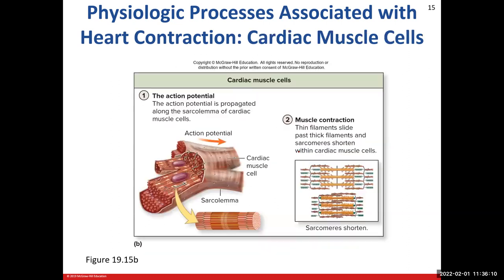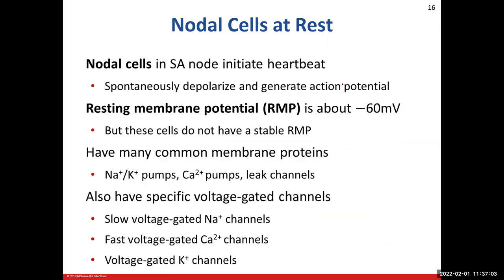Of course, we can't ignore our cardiac muscle cells — these are the ones that make the magic happen. They will also propagate the action potentials, and they're going to be the ones that contract. We already understand how that whole system works. Our sarcomeres will shorten because of that action potential — we'll have cross-bridge cycling going on — and as the sarcomeres shorten, the cardiac muscle cells will contract, causing the movement of blood through the heart and the circulatory system.